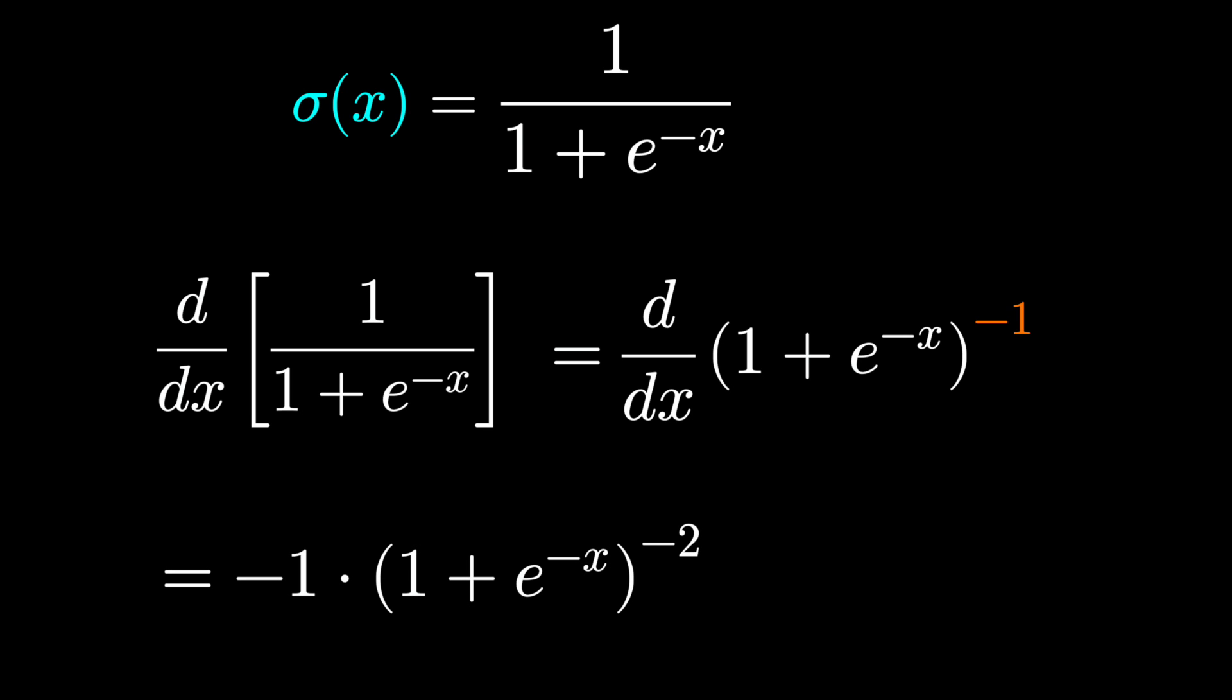Multiply by the negative 1, keep the inside, subtract 1 from the power, and multiply by the derivative of the inside.